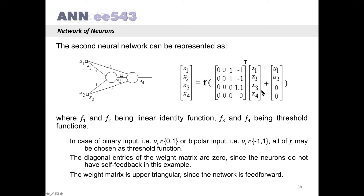...and it is multiplied by the state vector plus the threshold vector. In fact, the inputs are connected as theta values. For the input neurons 1 and 2, for which the outputs are x1 and x2, we have connections u1 and u2 connected as input. Here f1 and f2, the output functions for these two neurons, are linear identity functions, and f3 and f4 are threshold functions. So if this is a function vector, the first two components are linear identity functions and the last two components are threshold functions.